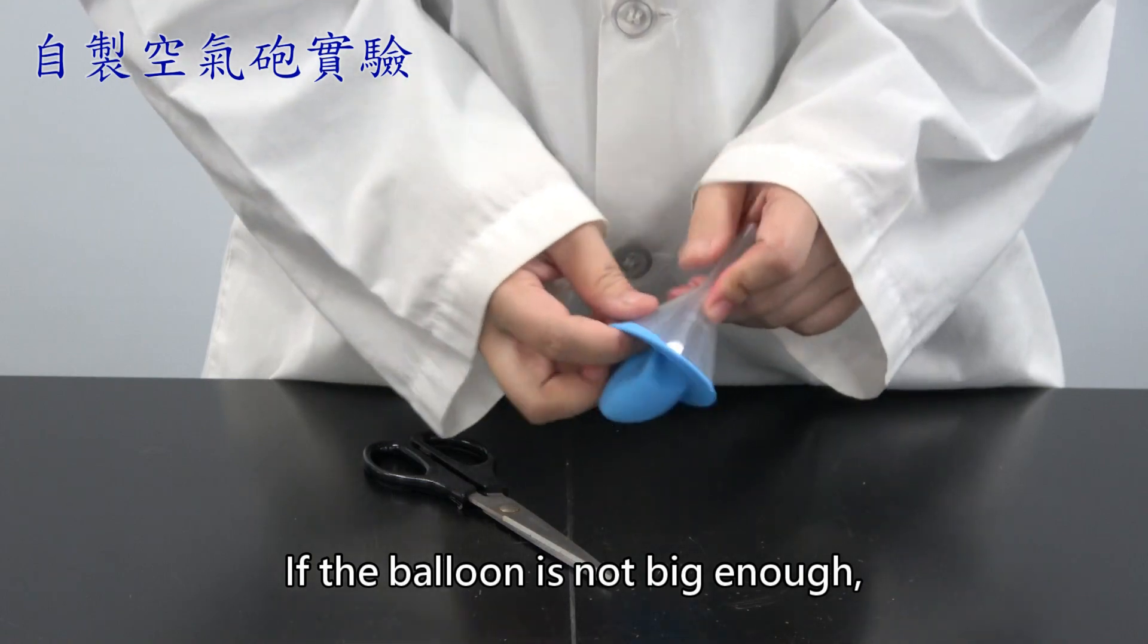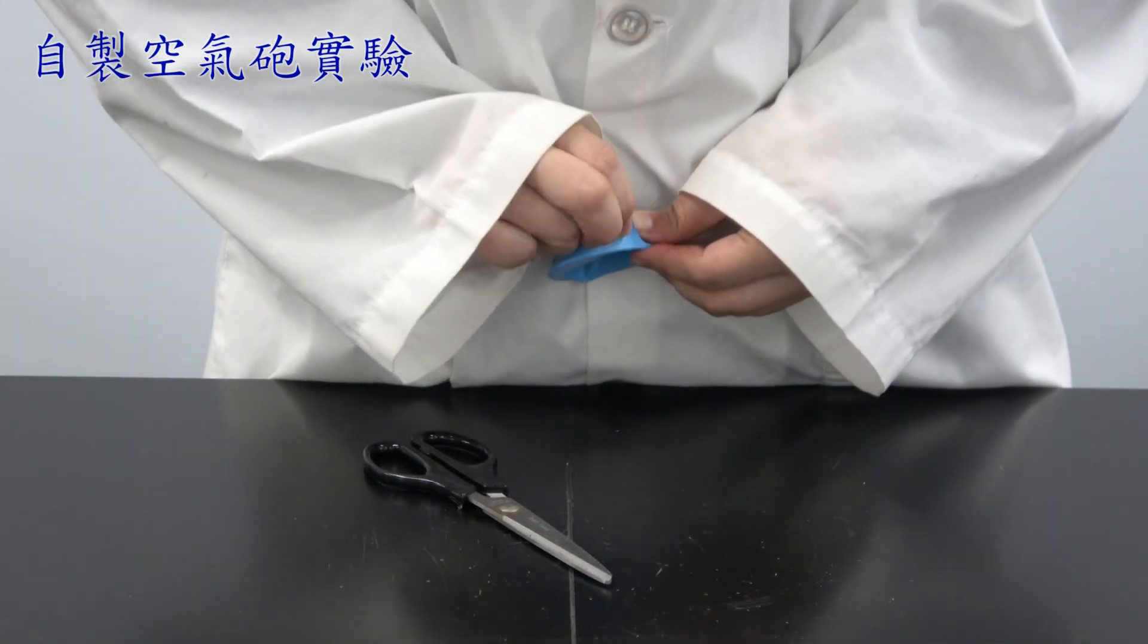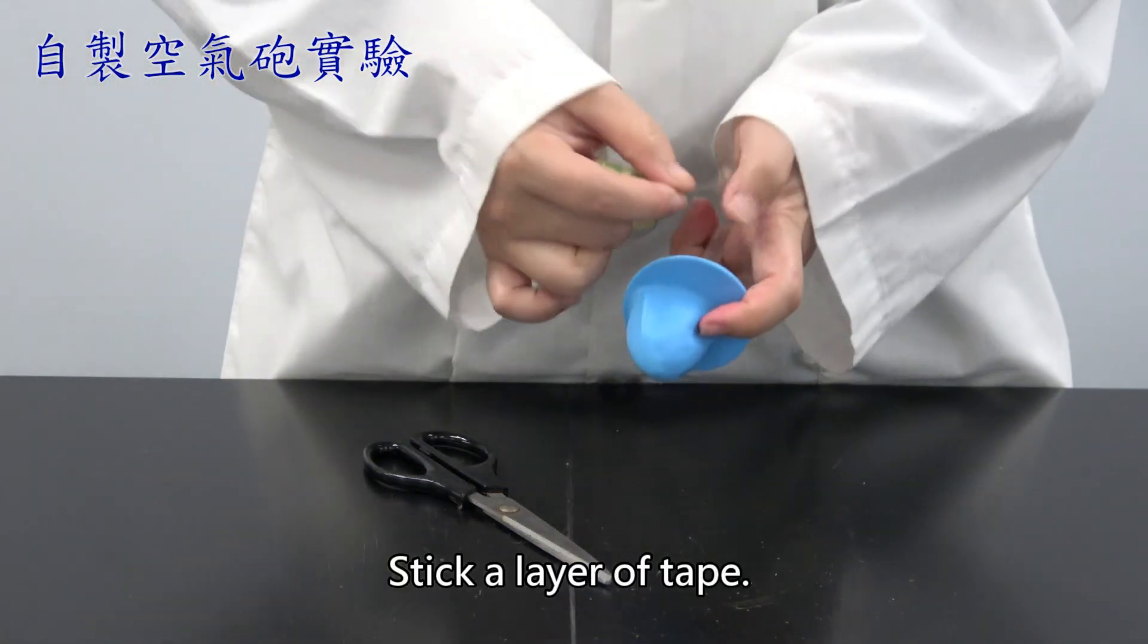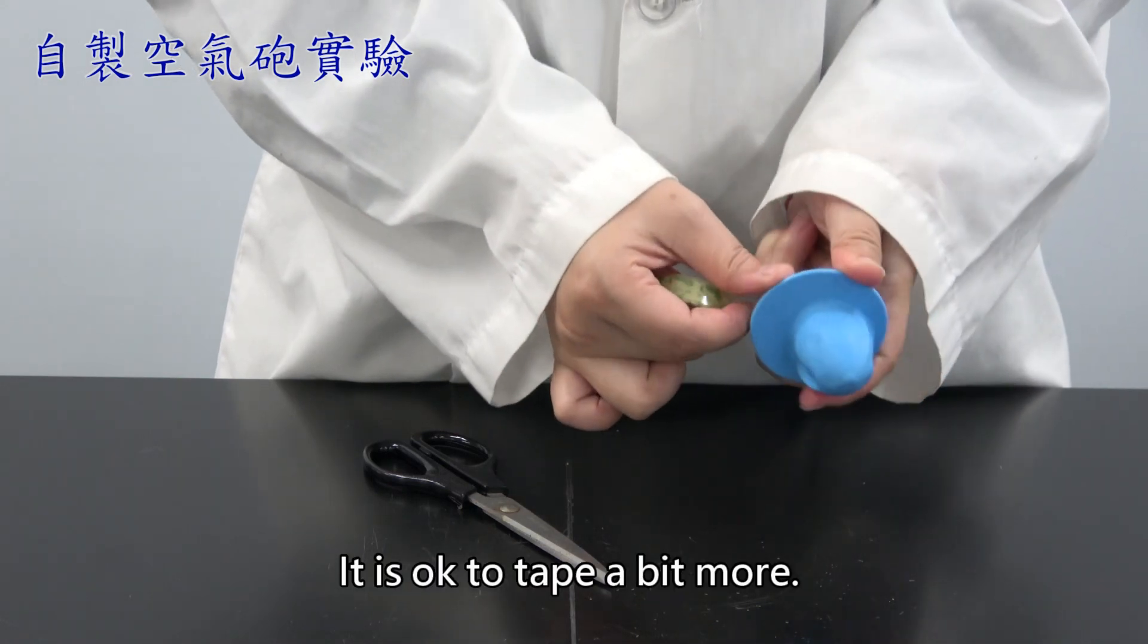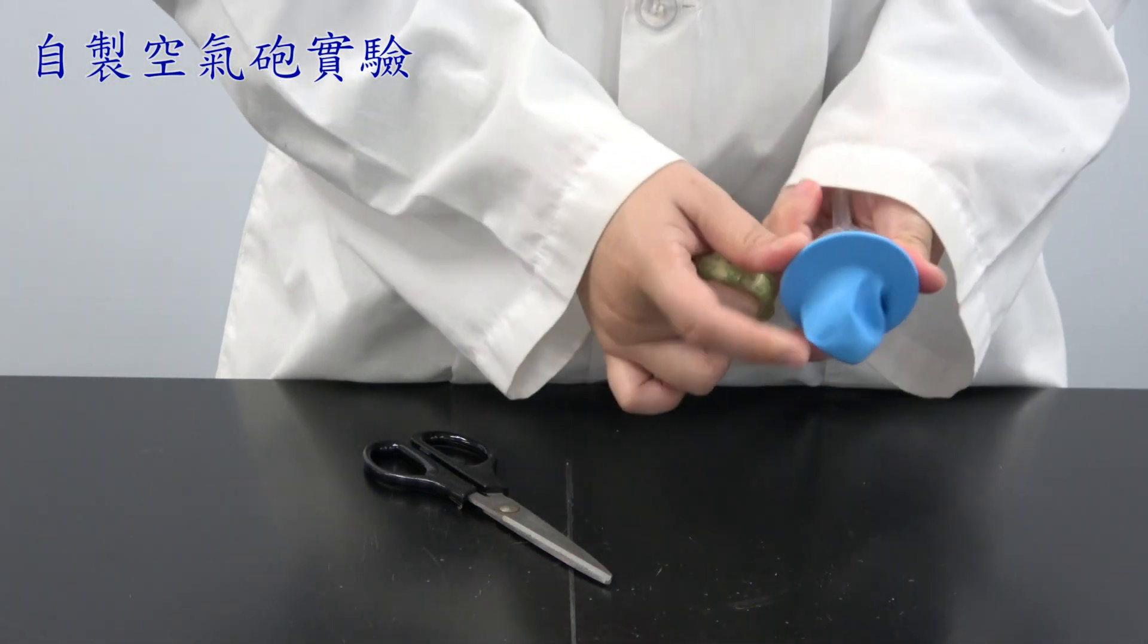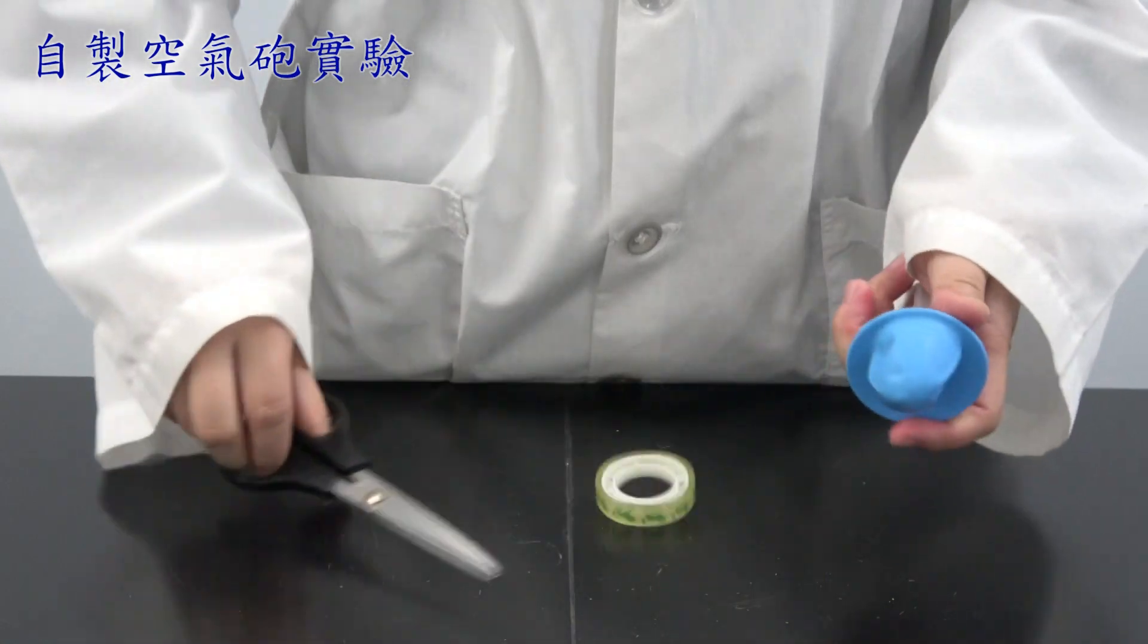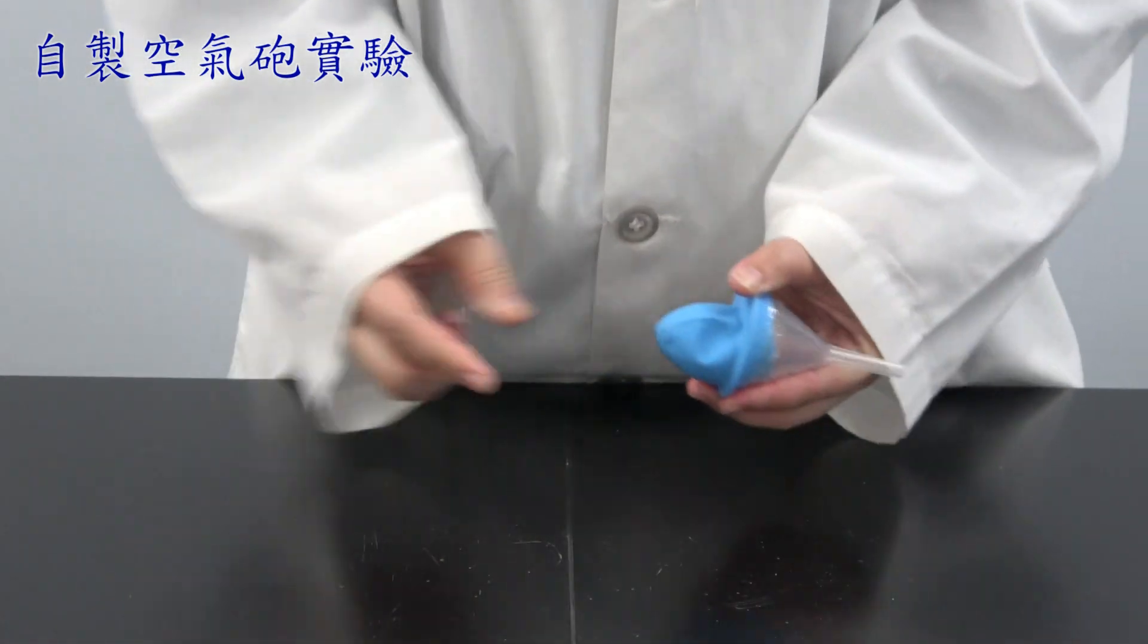If the balloon is not big enough, you can cut and make it bigger. Once it is on, to prevent the balloon from coming off, we will use tape to fix it. Stick a layer of tape. Make sure it is tight when you tape it. It is okay to tape a bit more. Once it is taped, the air cannon is complete. Later, we just have to pull this part, and it will shoot.